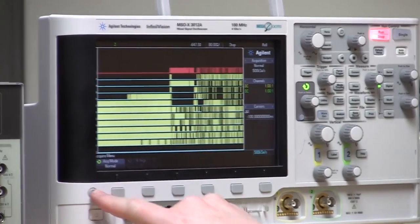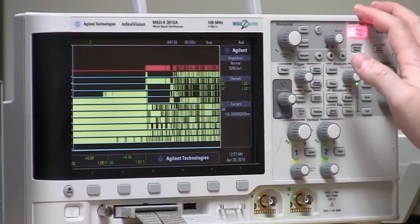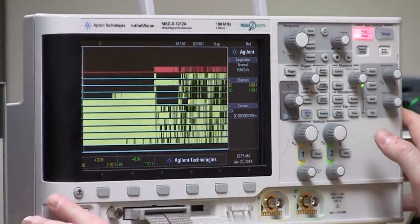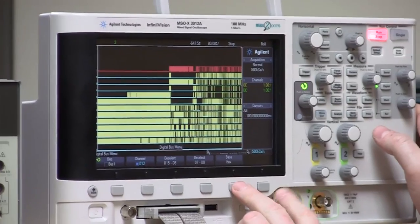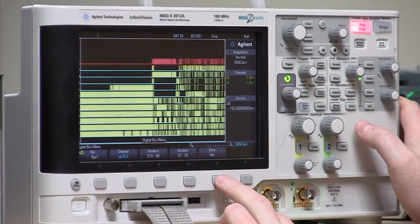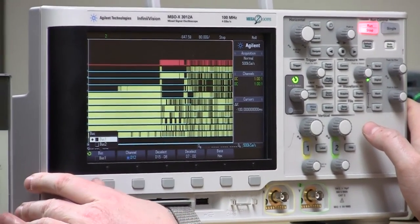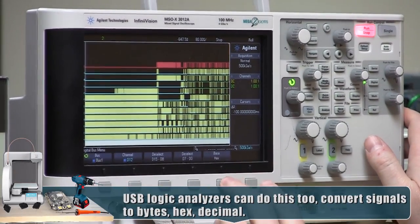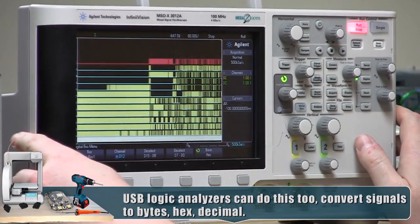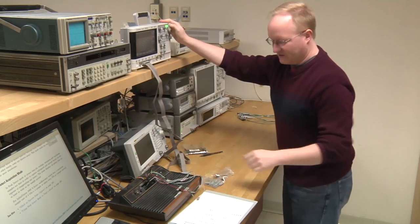And one nice feature on these fancier scopes is the ability to basically look at the bus and get a value out of it. So I'm going to go into the bus. I'm going to say bus 1. Okay. Now I'm going to go to hex. All right. So it's going to give us the value in hex. This is where it'll make a little bit more sense.